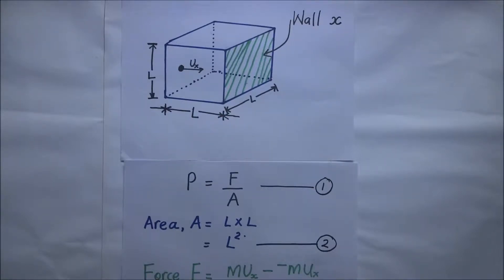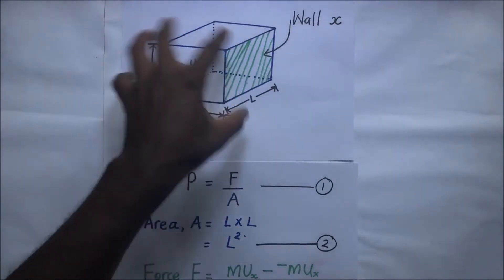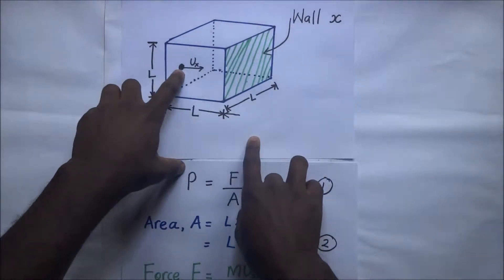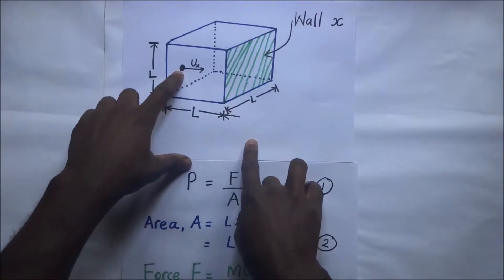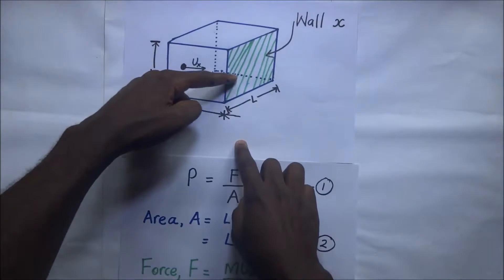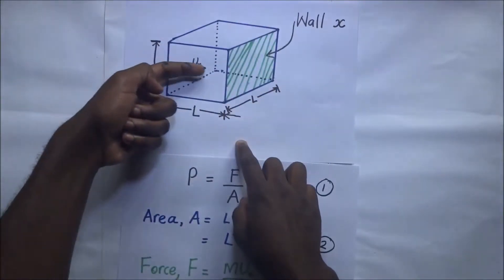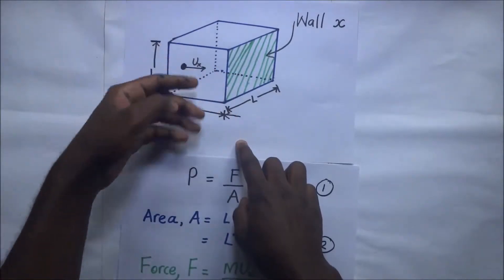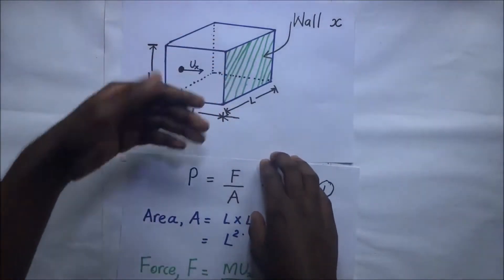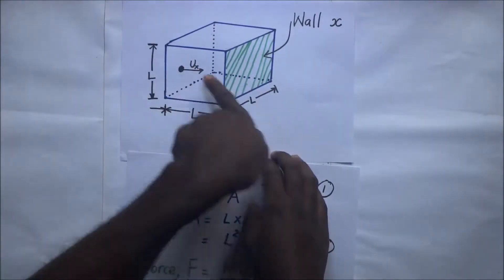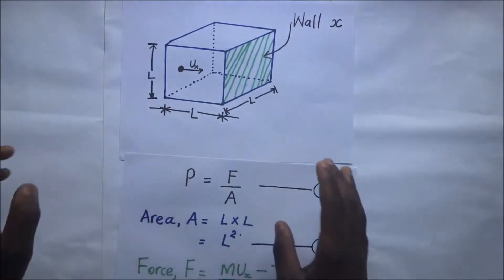In our derivation, we are going to assume a box, and inside this box there is an ideal gas. Inside that ideal gas, we have a particle moving from one side of the wall to the other — let's call that wall X. It collides with wall X and then goes back, moving through a distance L and back again.